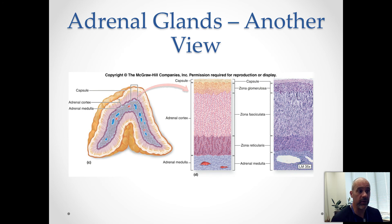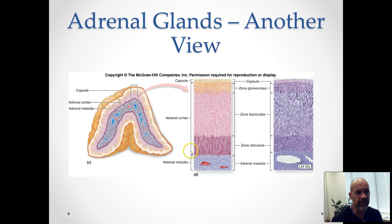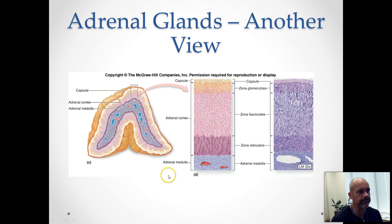Here's another view of the adrenal glands on this PowerPoint. This gives you a nice representation. There's the adrenal cortex highlighted with the cursor, and if you blow that up, it's divided up into those three zones — glomerulosa, fasciculata, and reticularis — and then in the center, that's your adrenal medulla.